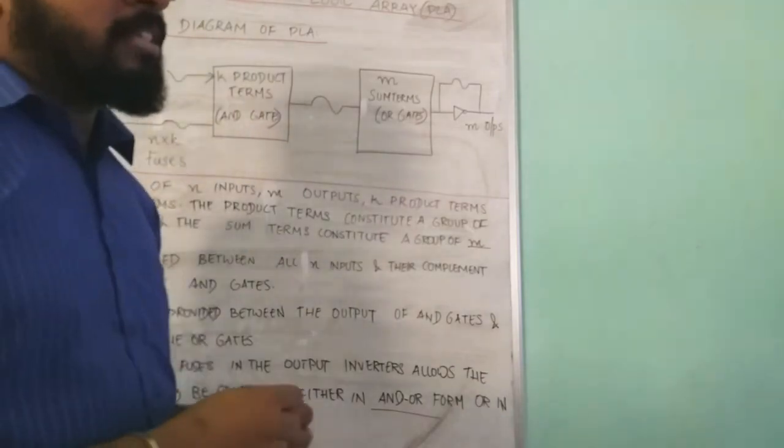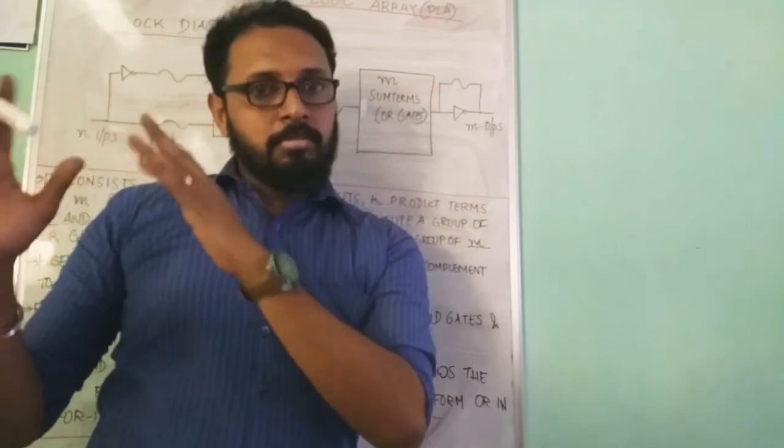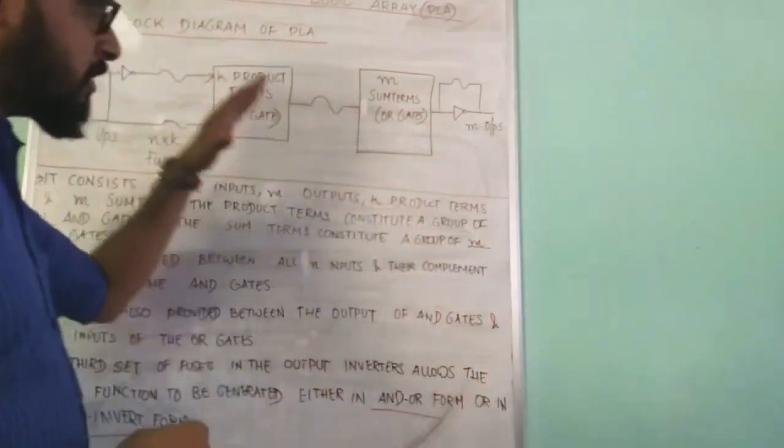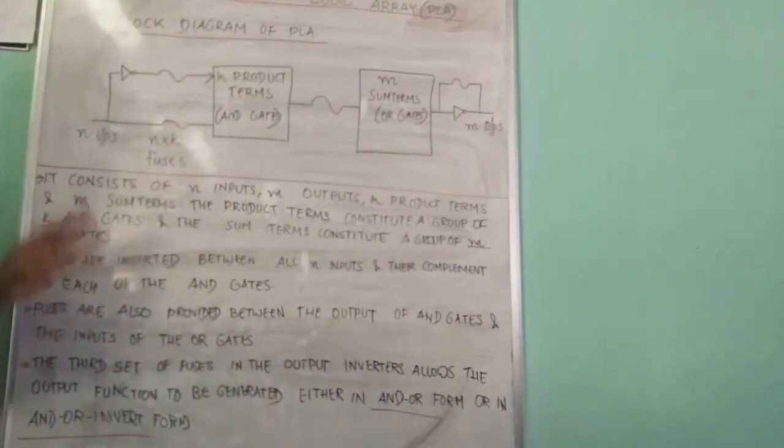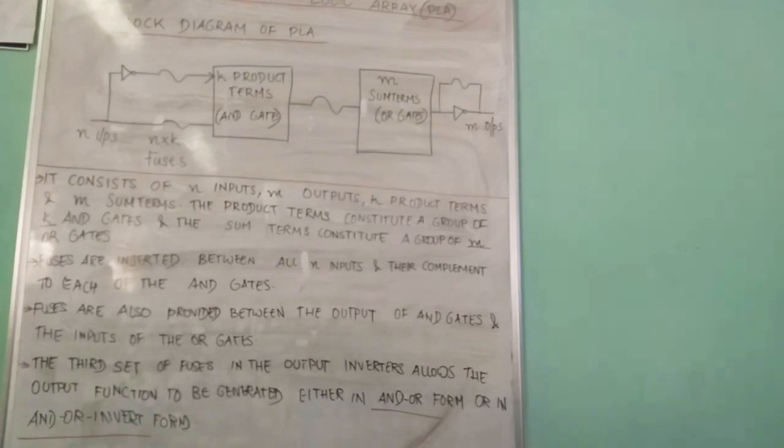It is possible there is a chance that you may get confused by seeing all these, but when we go for the problem-solving session, it will be clear to you. This is just the theory part, please go through. This is the block diagram of PLA and its explanation. Thank you.